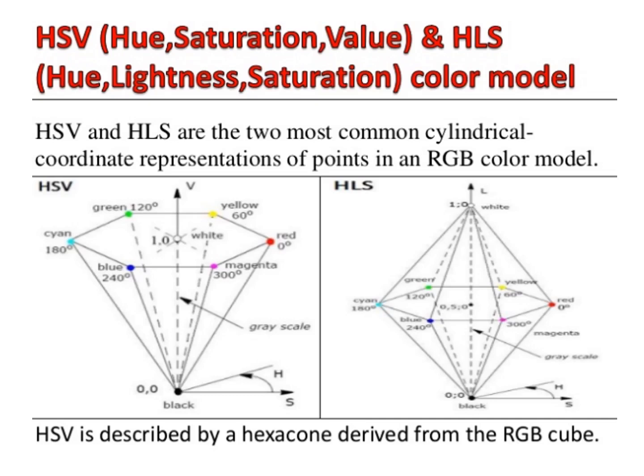When V equals 1 and S equals 1, we have the pure hue. For example, pure red is at H=0, V=1, S=1; pure green is at H=120, V=1, S=1; pure blue is at H=240, V=1, S=1. The required color can be obtained by adding either white or black to the pure hue. Black can be added by decreasing V while S is held constant. White can be added by decreasing S while keeping V constant. To add both black and white, decrease both V and S.